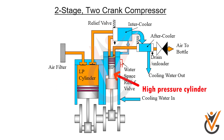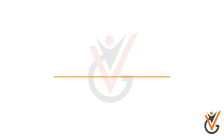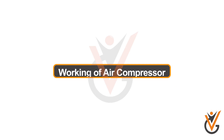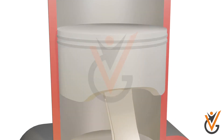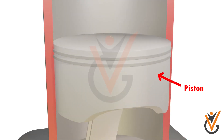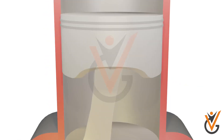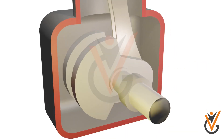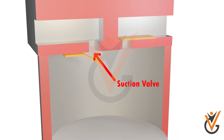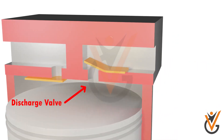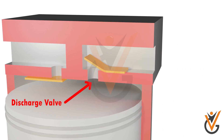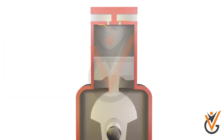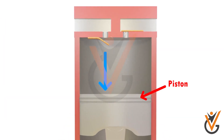Working of Air Compressor: A reciprocating air compressor consists of a piston, connecting rod, crankshaft, suction valve, and discharge valve. The piston is connected to the low and high side of the suction line and discharge line.